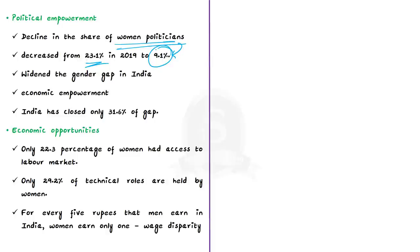In the economic empowerment dimension, India and Pakistan have only closed 31.6 percent and 32.6 percent respectively in the economic participation and opportunity gap. Only 22.3 percent of women had access to the labor market, and in India only 29.2 percent of technical roles are held by women. For every 5 rupees that men earn in India, women earn only one.